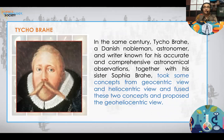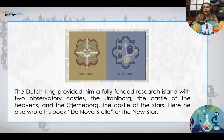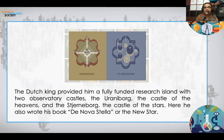When Nicholas Copernicus reintroduced the heliocentric view, Tycho Brahe — also an astronomer — did not immediately accept it. Instead, he combined concepts from the geocentric and heliocentric views and created the geoheliocentric view. He was fortunate because the Dutch King provided him a fully funded research island with two observatory castles: Uraniborg, the castle of the heavens, and Stjerneborg, the castle of the stars. There he wrote his book Denova Stella, also called The New Star.